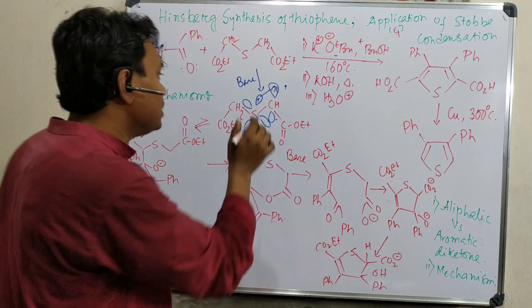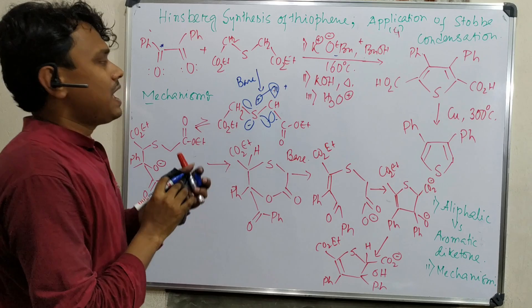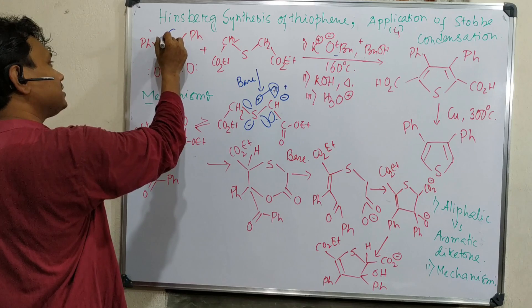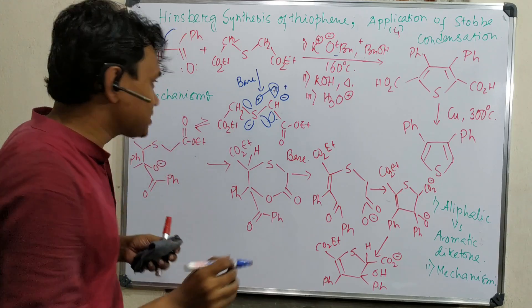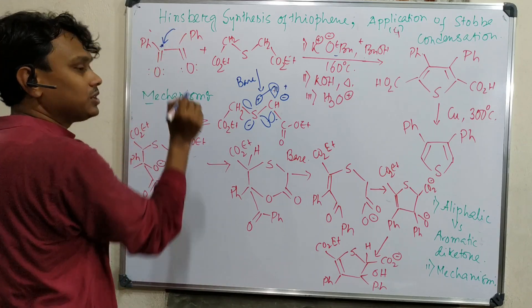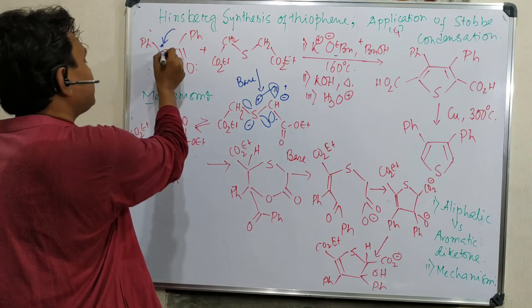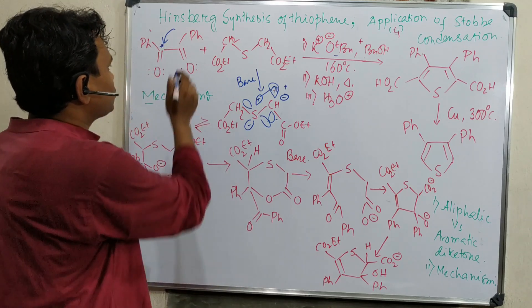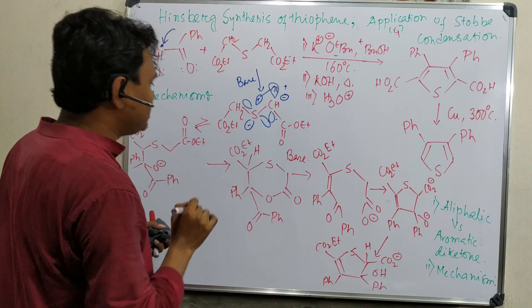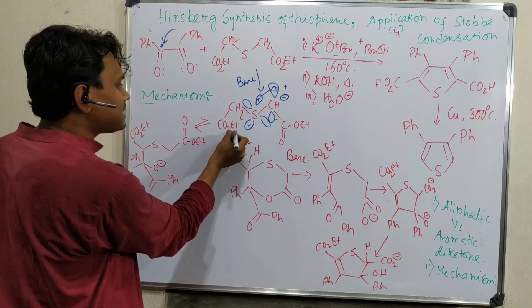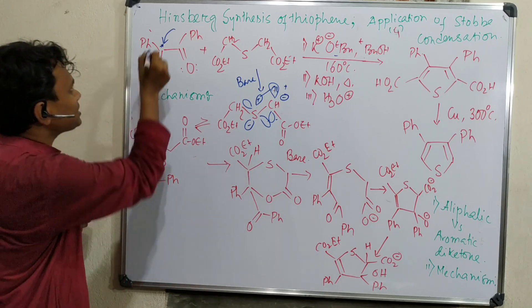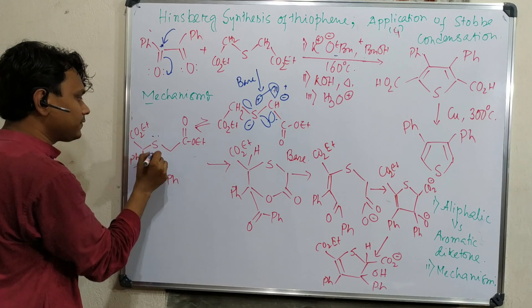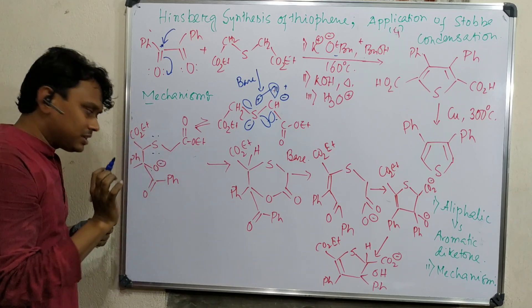This is the carbanion. As we know, the generated carbanion here can attack this carbonyl carbon. This carbonyl carbon is very electron deficient because it's adjacent to another carbonyl. The two carbonyl groups make the carbon very much electron deficient. So this attack happens. After this attack, the open shell produces O-minus, and here is the sulfur with alpha hydrogen.